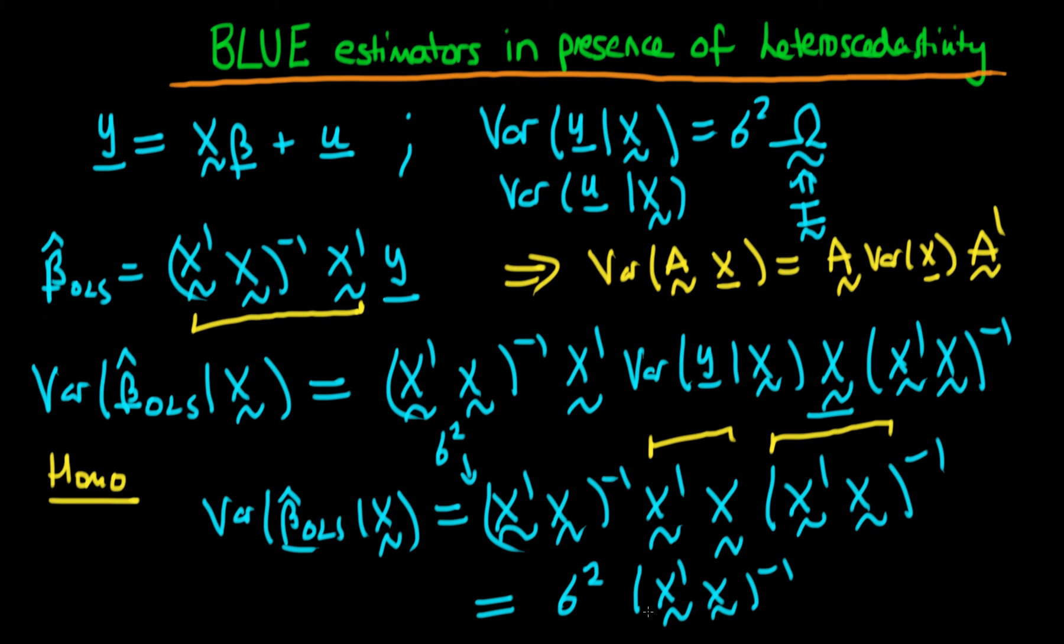In the next video I'm going to derive the expression for beta hat OLS in the presence of heteroscedastic errors and I'm going to compare the two expressions.